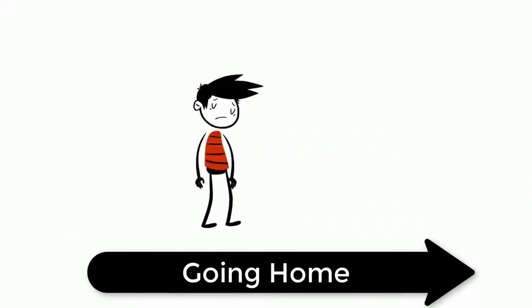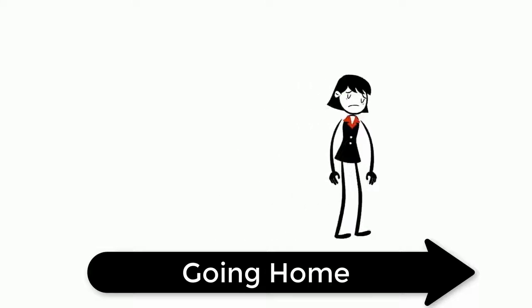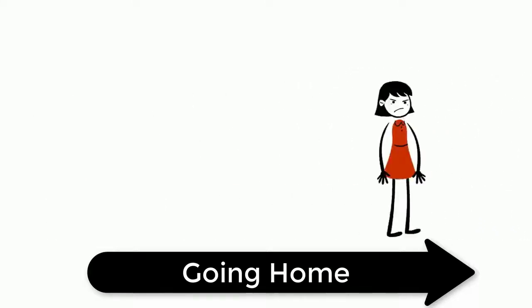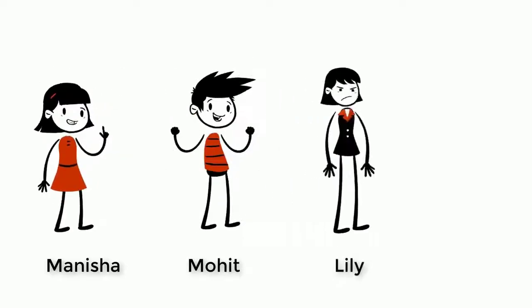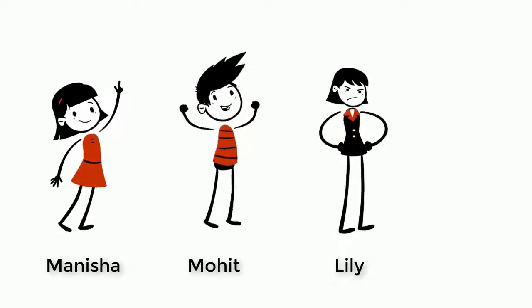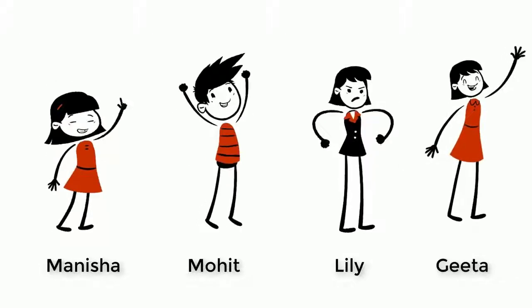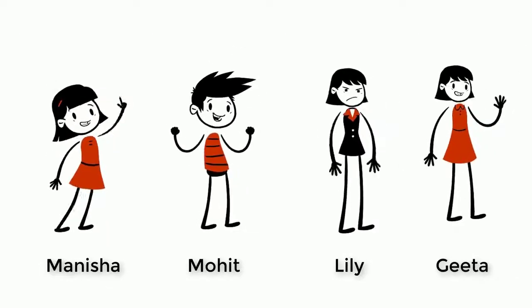After reaching their homes, the learners started doing their homework and tried to remember what Miss Ishu taught in the class. Learners like Manisha did their homework thoroughly while others like Mohit found it easy but did not pay attention to homework. Lili got frustrated and needed some extra help and learners like Gita did not bother about any homework.